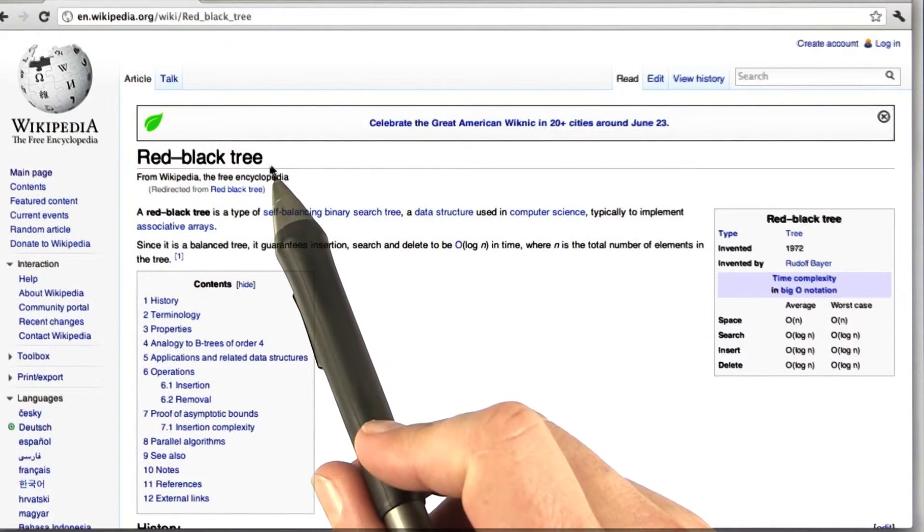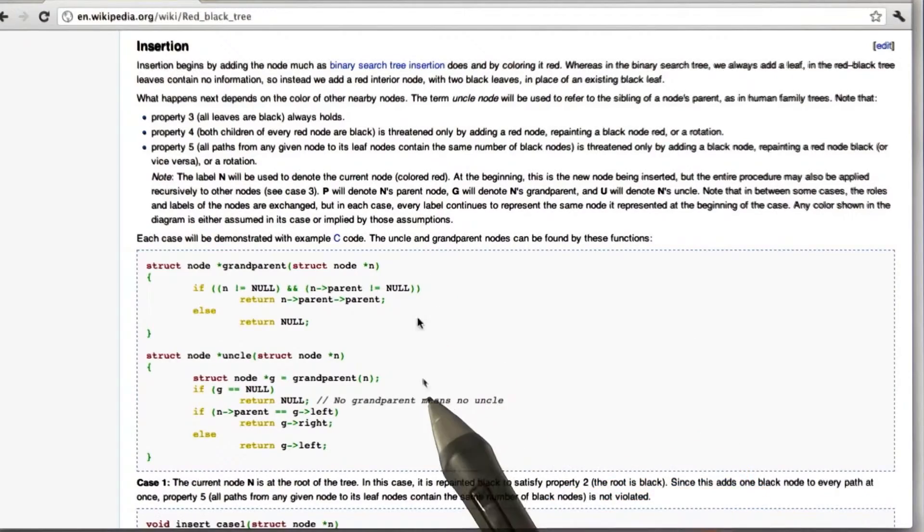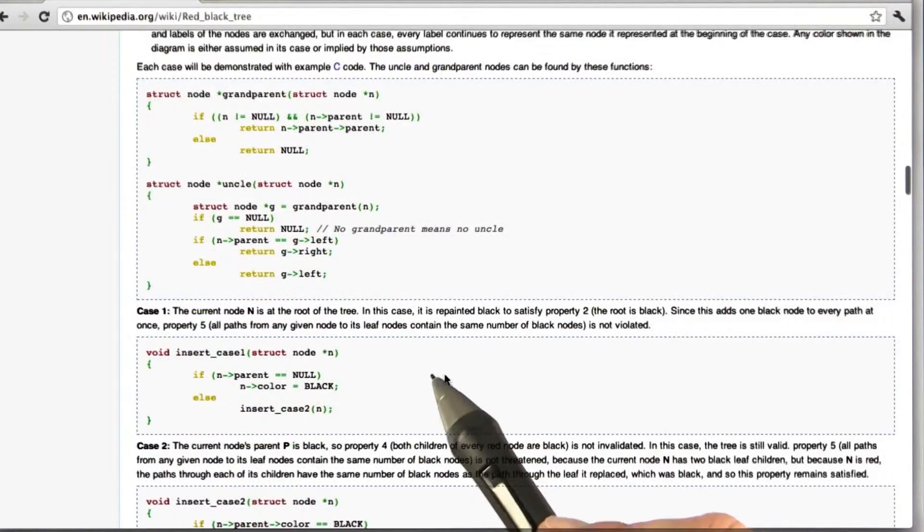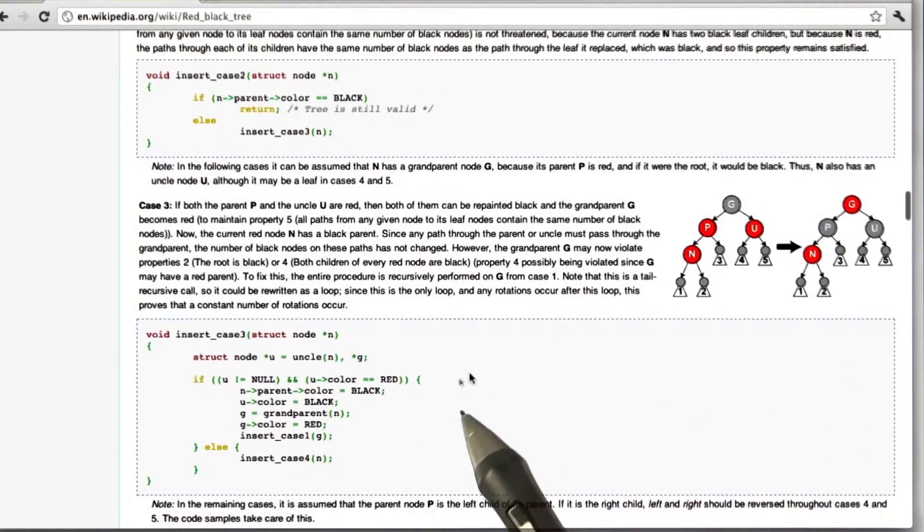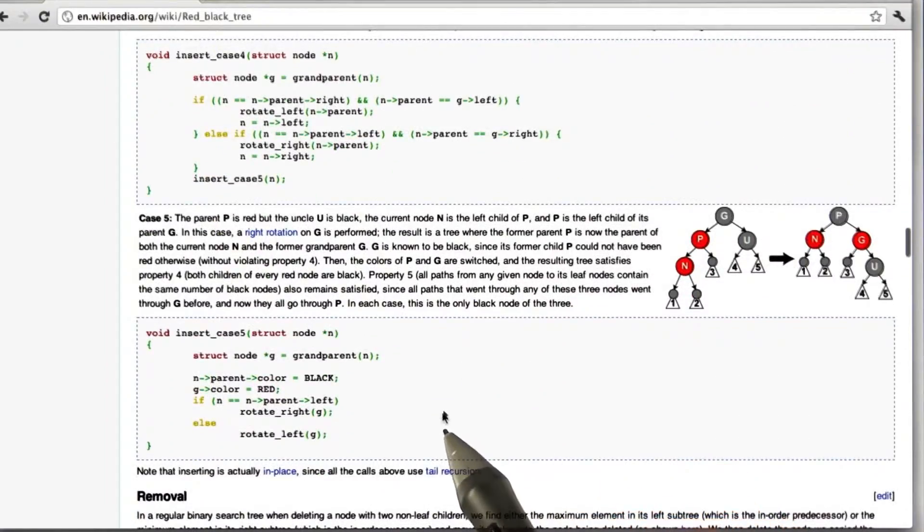This is the Wikipedia page on red-black trees. Here's the insertion. This is two helper functions, grandparent and uncle. And now we go to one, two, three different cases, all with individual code that needs to be handled. Here's case number four, and here's case number five.